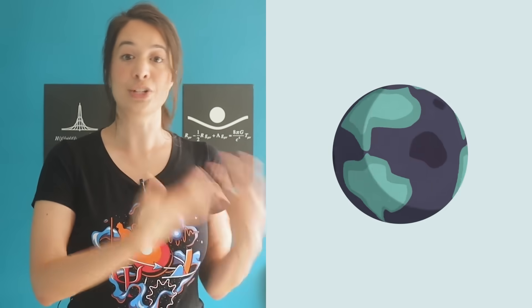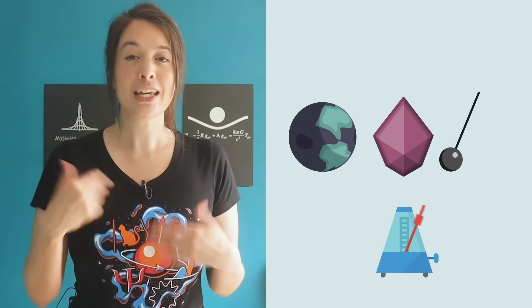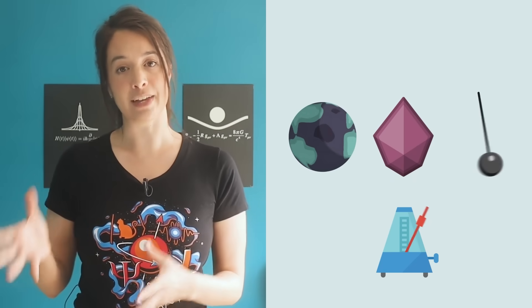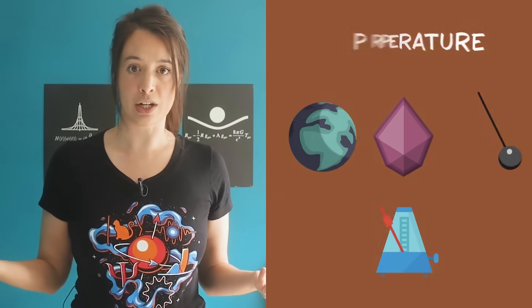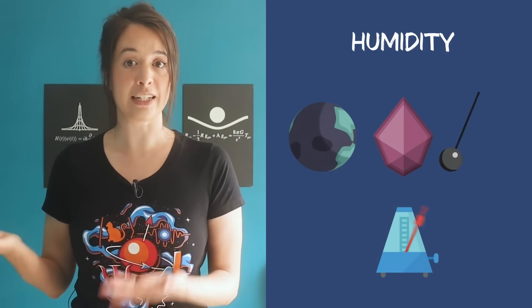We need to understand what an atomic clock is and how it works. A key ingredient of any clock is a regularly repeating event, like the rotation of the earth, a swing of a pendulum, or the oscillation of a quartz crystal in a watch. This repeating event serves as a reliable tick. But the annoying thing about these clocks is that they can be affected by the environment. Temperature, pressure, and humidity can affect their ticking rate. Their components can break down over time. Even their size and shape can affect how they tick.